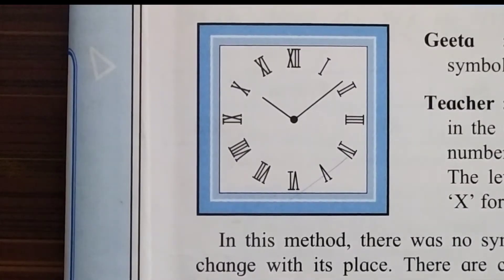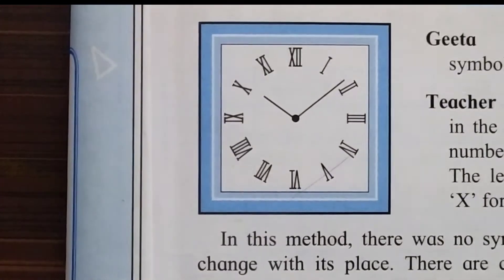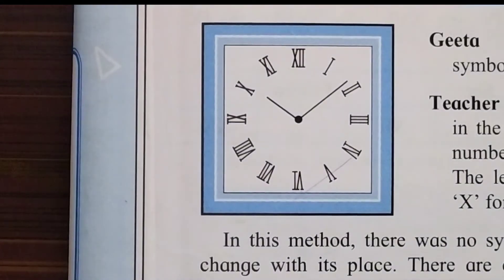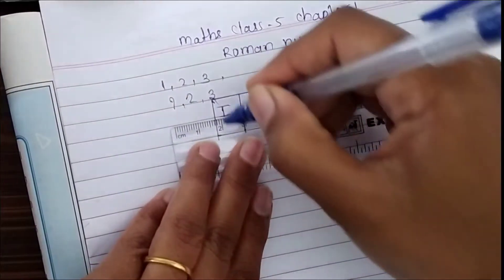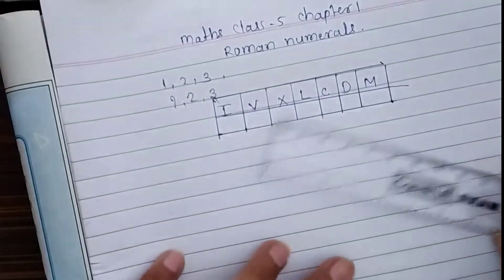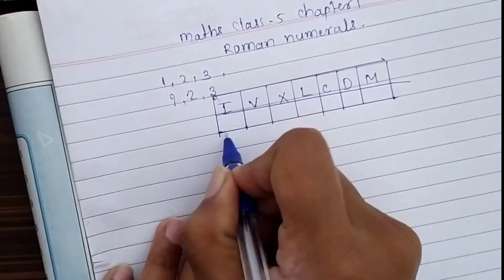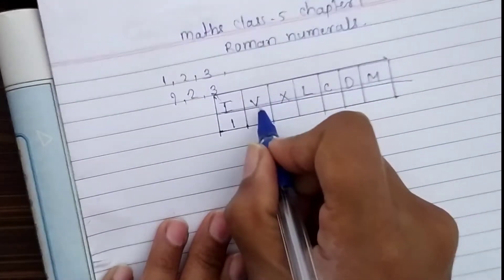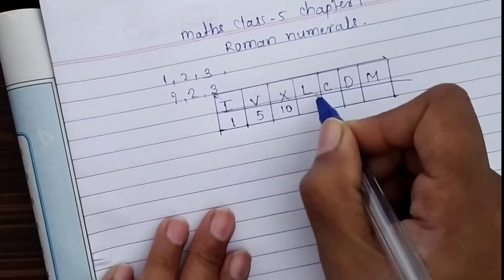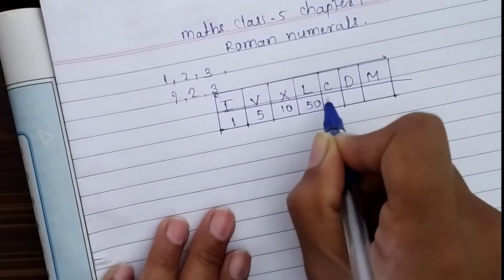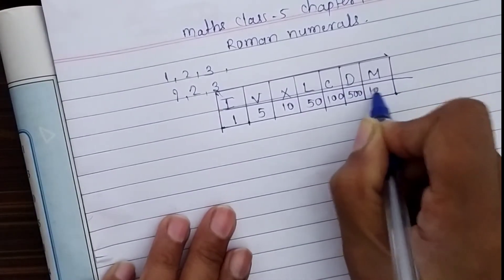It's very easy and simple. There are some basic symbols or alphabets in Roman numerals. By using these seven symbols we can write numbers in Roman. I represents 1, V for 5, X for 10, L for 50, C for 100, D for 500, and M for 1000.